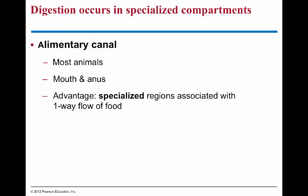Most other animals have alimentary canals, also called a complete digestive system — a system like ours with a mouth opening, a digestive tract, and an anus at the other end. As you go along the tube, there are different specialized regions for certain digestive steps, which is the key advantage of an alimentary canal over a gastrovascular cavity.